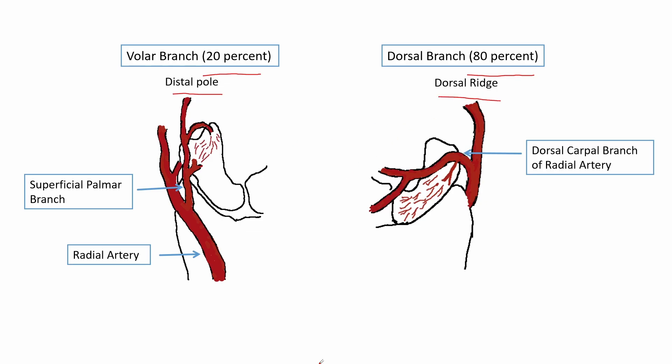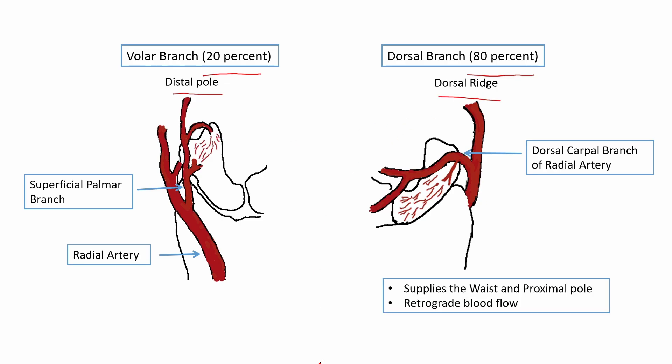Following its entry through the dorsal ridge, it supplies the waist and proximal pole of the scaphoid through retrograde blood flow. So in the blood supply of the scaphoid, we see that the distal pole is well supplied, whereas the waist and proximal pole receive their blood supply only through retrograde intraosseous blood flow.